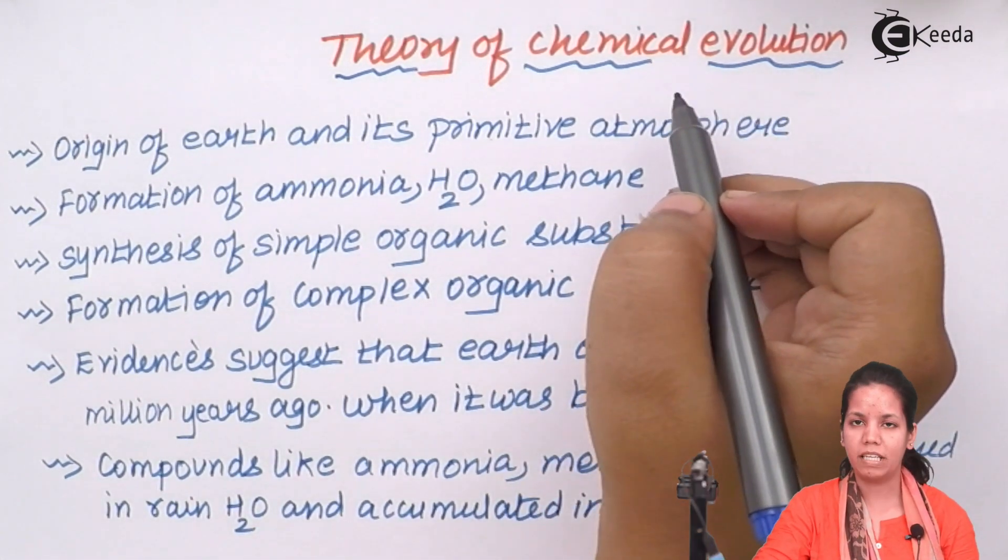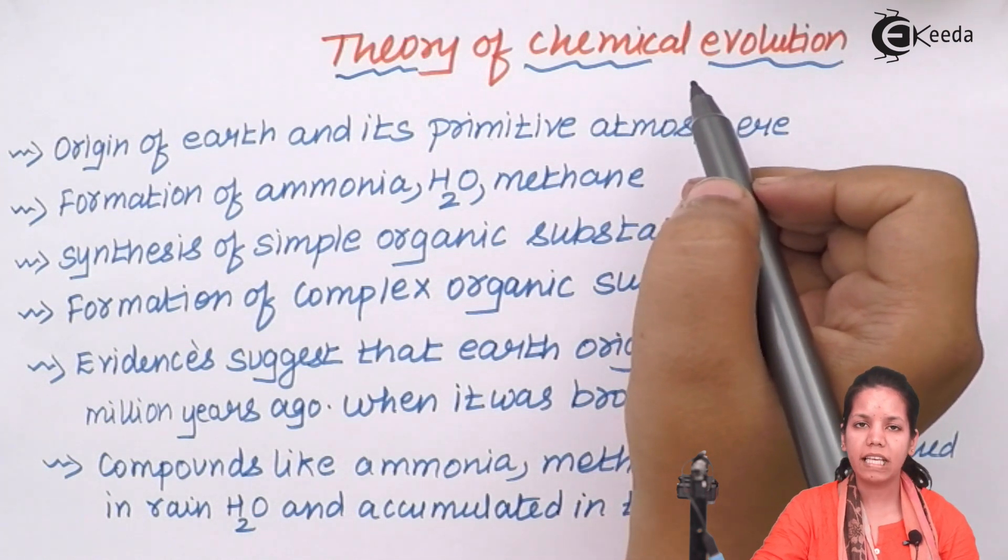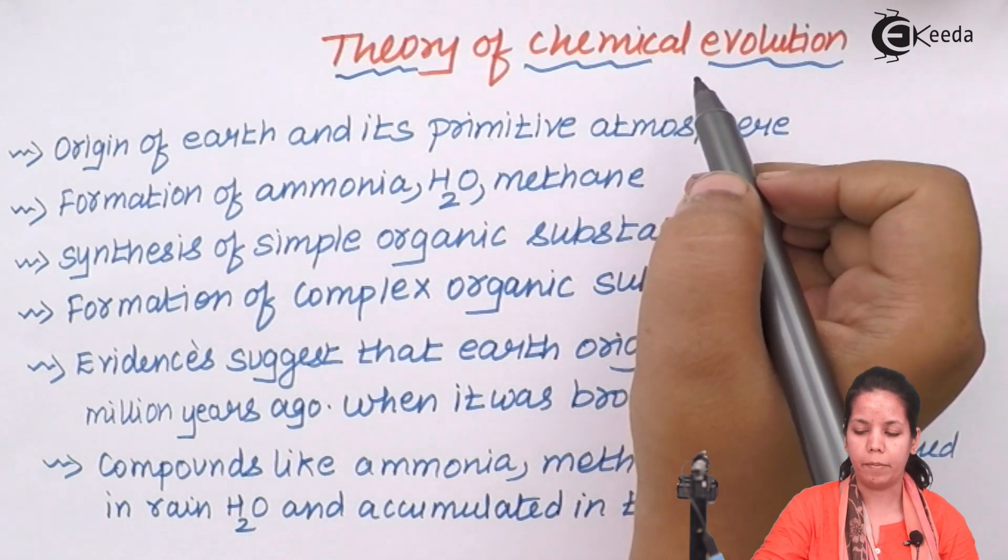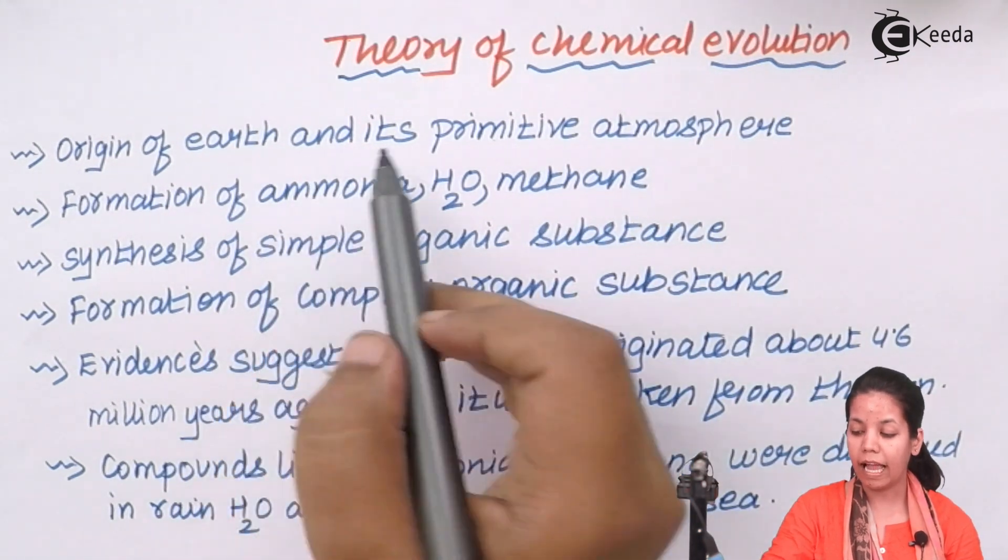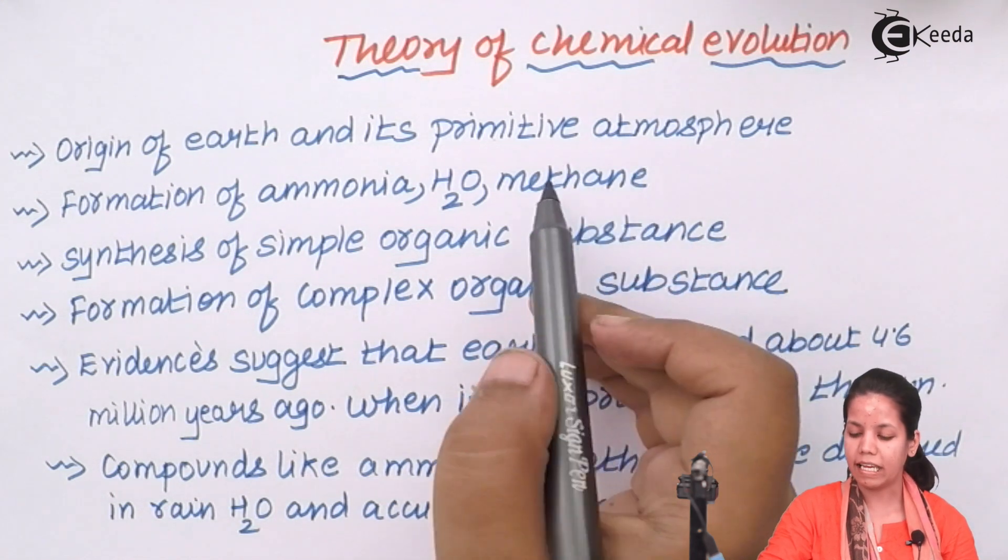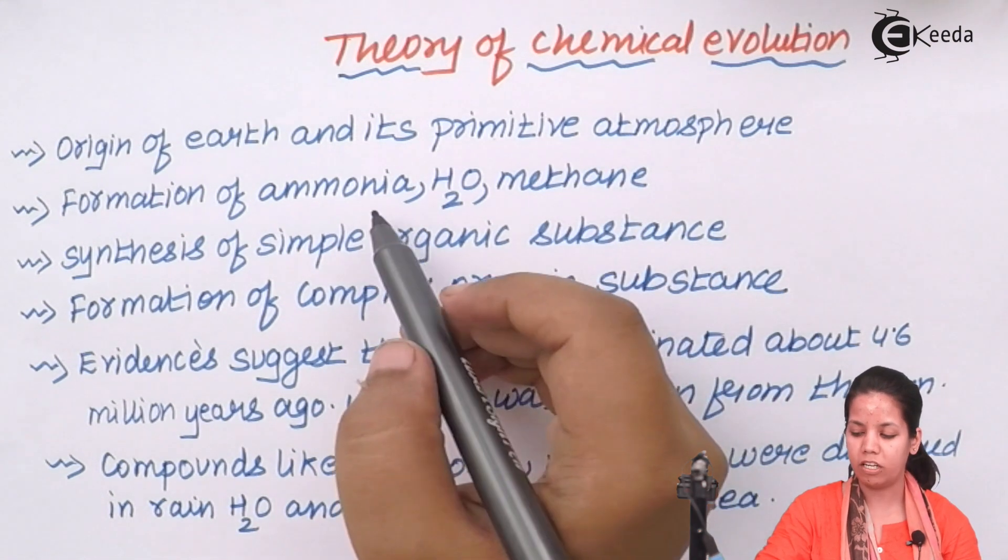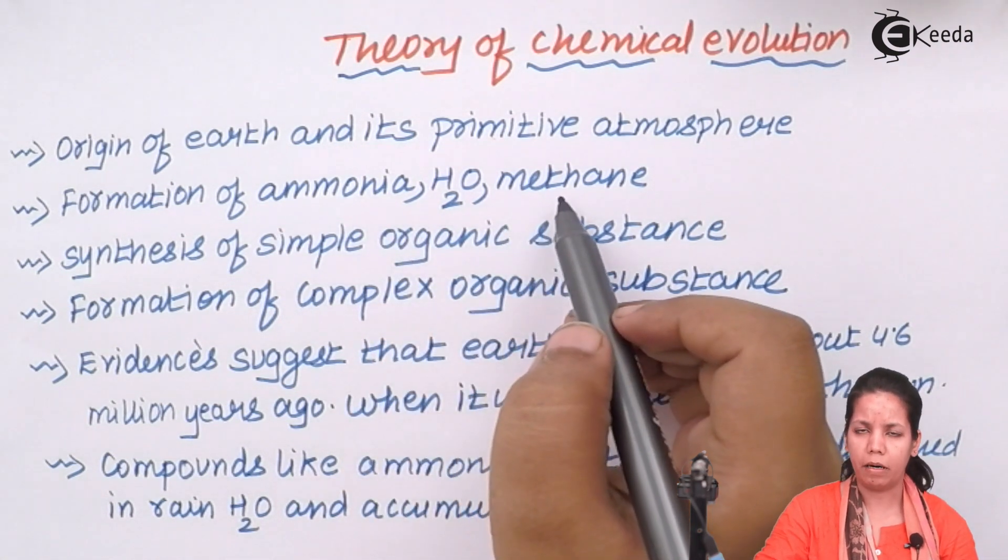Theory of chemical evolution is precisely based on four parameters and those are that origin of earth and its primitive atmosphere was the first thing that happens. Secondly, there was a formation of NH3 or ammonia, water and methane particles.